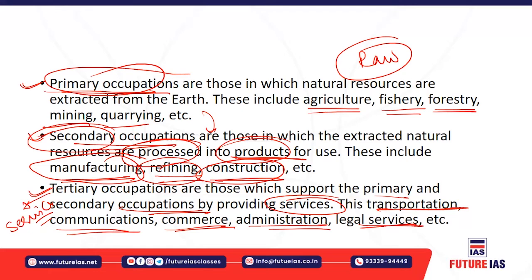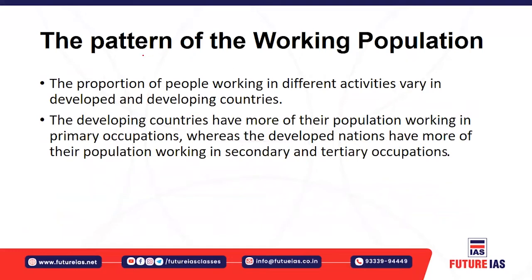The occupational structure of the population means the number of people employed in different occupations — the primary, secondary, and tertiary sectors. The pattern of working population refers to the proportion of the population working in different activities. In developed countries, more people work in the service or tertiary sector, while in underdeveloped societies more people work in the primary sector.